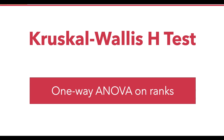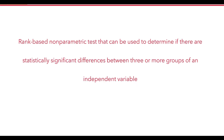Hello friends, I am Dr. Rahul Sharma and let us discuss about the Kruskal-Wallis H test. This test is also called as one-way ANOVA on ranks because this is the non-parametric equivalent of one-way ANOVA. It is a rank-based non-parametric test that can be used to determine if there are any statistically significant differences between three or more groups of an independent variable.